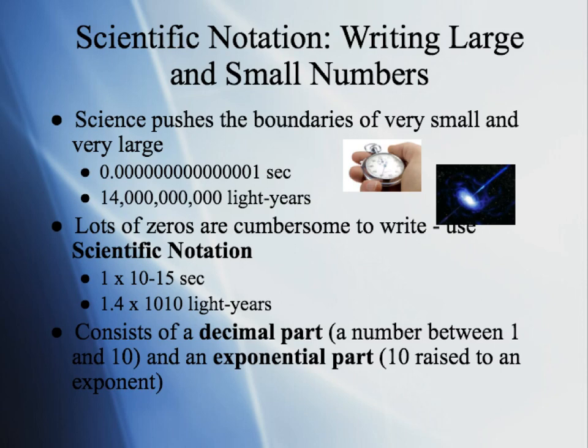For example, if we have this number for seconds — 0.000000000000001 second — instead of saying that to somebody, we can say that measurement is 1 times 10 to the negative 15 seconds, which makes it easier to communicate when talking about measurements and doing calculations.